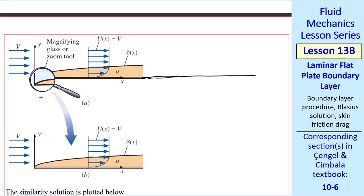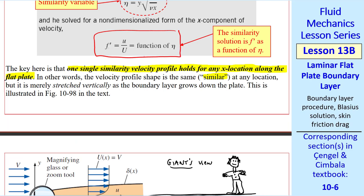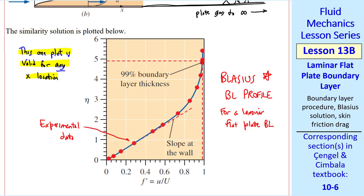The key here is that there is no length scale in the problem. The plate goes to infinity. So if you're looking at this from some far distance, like a giant would see, and now we zoom into the front part with the magnifying glass, we have an ants view of this flow. But since there's no length scale in the problem, these two flows look identical. That's what we mean by the similarity analysis. We solve for this function F prime or U over U numerically as a function of eta, and I plot that here. The nice thing about a similarity solution is that this one plot is valid for any X location. This is the famous Blasius boundary layer profile for a laminar flat plate boundary layer. I also plot some experimental data, and you can see that the Blasius profile is a big success. It matches almost exactly with experiment.